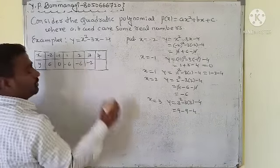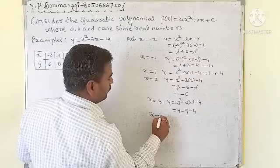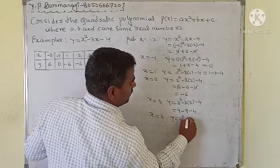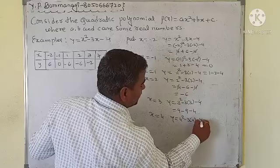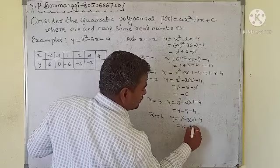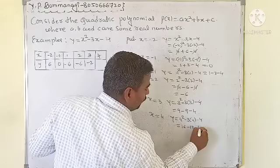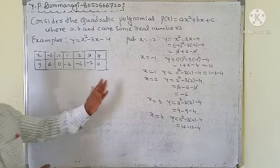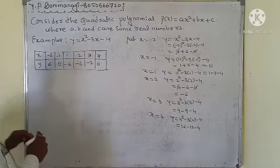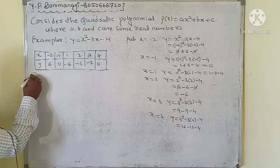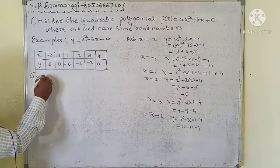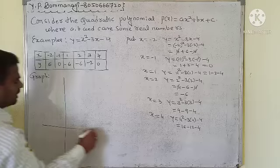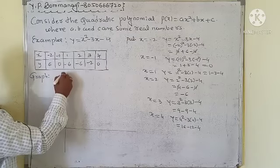When x = 4: y = 4² - 3(4) - 4 = 16 - 12 - 4 = 0. Now using this table, we are going to construct the graph. The graph is most important.